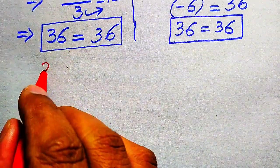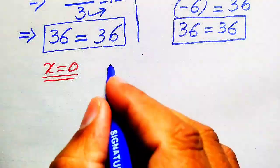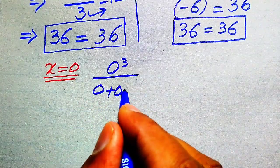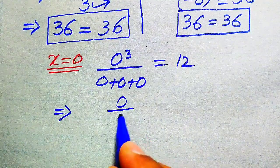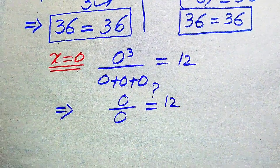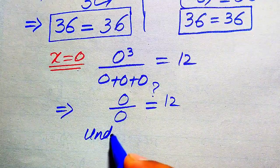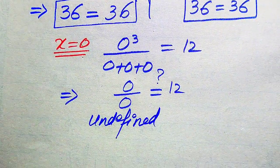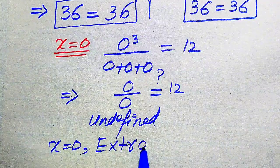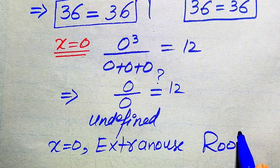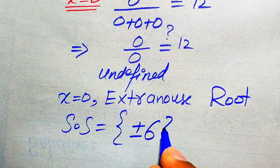For x equals 0: substituting into the left-hand side gives 0 cubed divided by 0, plus 0 plus 0, which produces the 0 over 0 form. This is the indeterminate form — undefined. Since the left-hand side is undefined, it does not equal 12, so x equals 0 is an extraneous root and is not a solution.